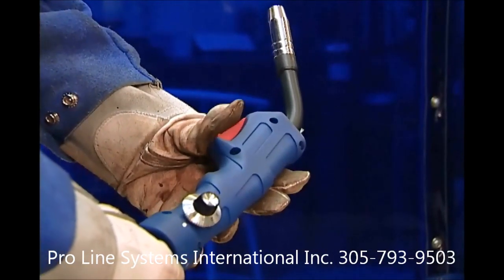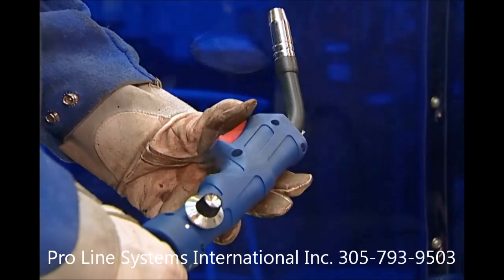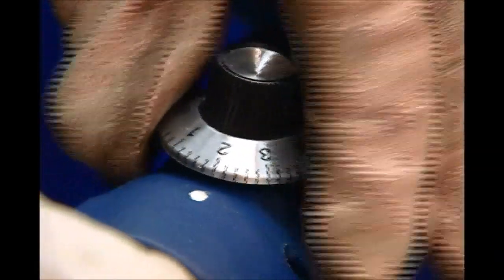Both current and wire speed are controlled together by the welder and adjusted by this knob on the MIG gun.